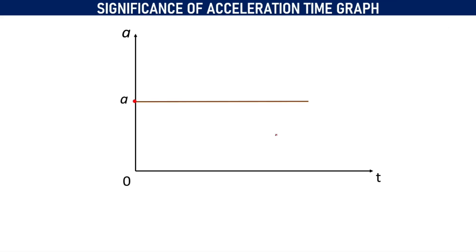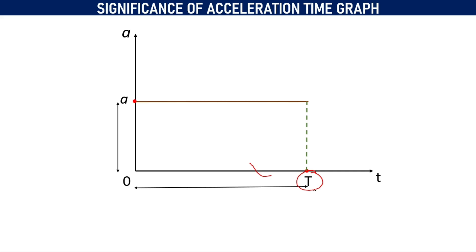Now, you have observed the classic example of motion of a car with the help of the acceleration-time graph. Finally, let us observe the significance of the AT graph. Consider one object moving with constant acceleration — we will get a straight line parallel to the time axis. Now, if we consider a time interval T seconds, we get a rectangle where acceleration represents the length and time represents the breadth.